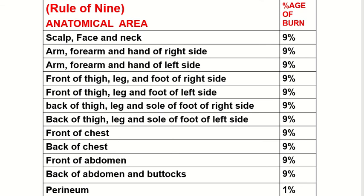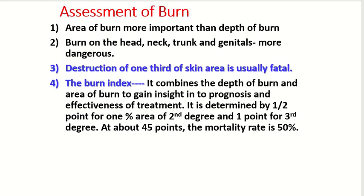The back of the thigh, leg, and foot of the right side are 9%. The back of the thigh, leg, and foot of the left side are 9%. The front of the chest is 9%, back of the chest is 9%, front of the abdomen is 9%, back of the abdomen and buttock is 9%, and the perineum is 1%. This is called the rule of 9.